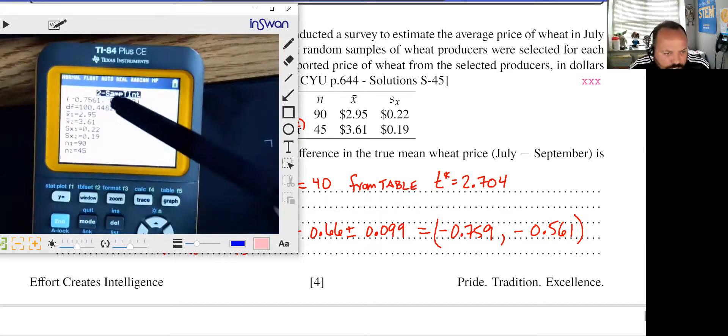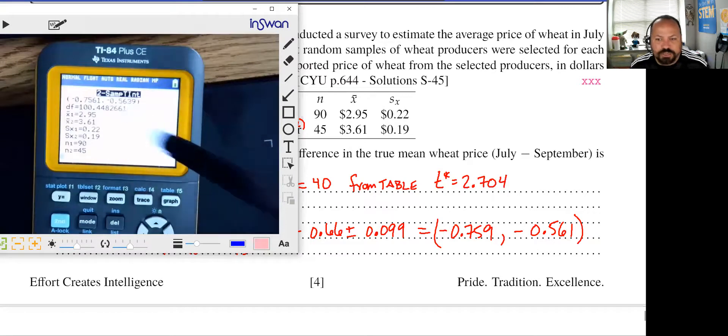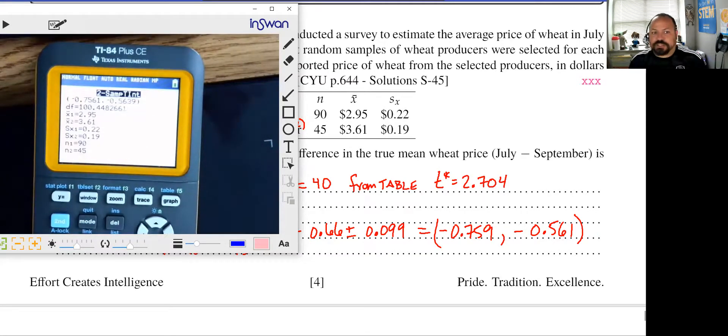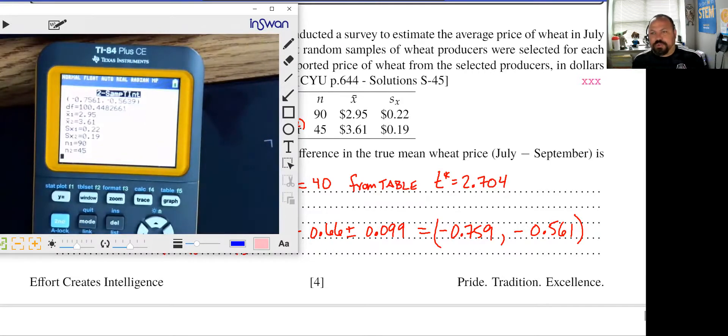All right. And so we see the calculation is negative 0.7561 to negative 0.5639. So very close, but a slightly larger interval. And that's because we have degrees of freedom of 100.45. And that degrees of freedom comes from a calculation that your calculator is doing, that you need to be familiar that the formula exists, but you don't need to use that formula. But it is going to be important that you clearly indicate the degrees of freedom that you're using in your problem, because that's going to dictate your interval.